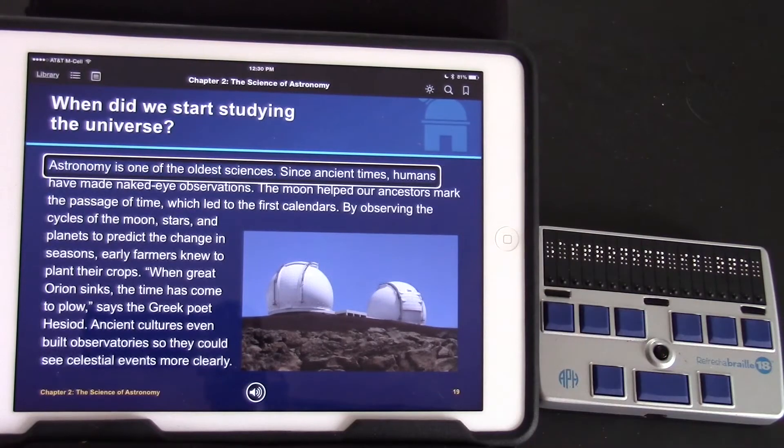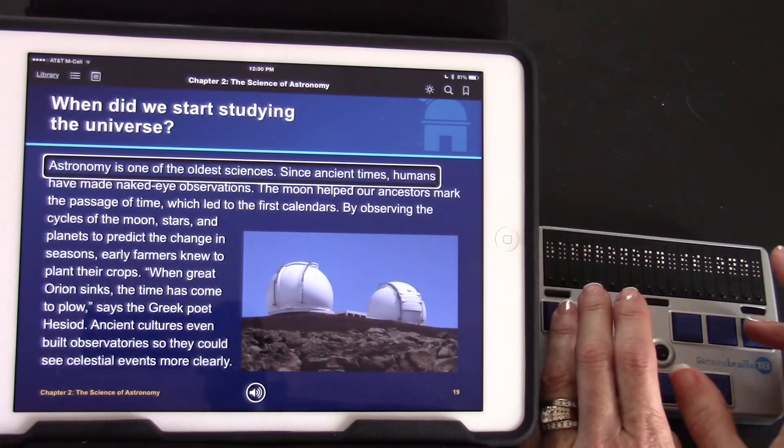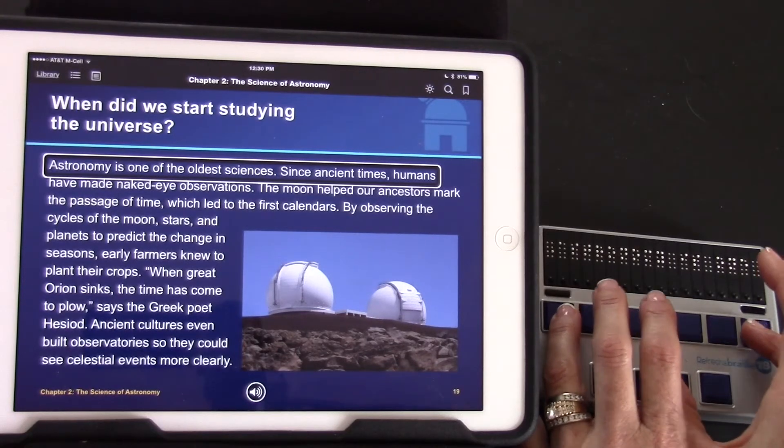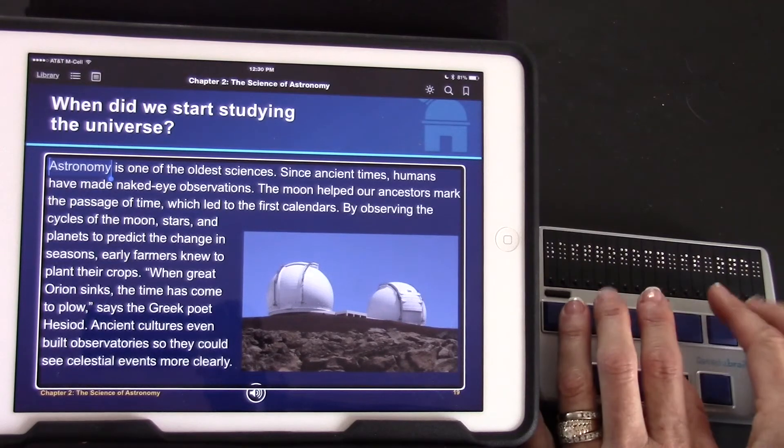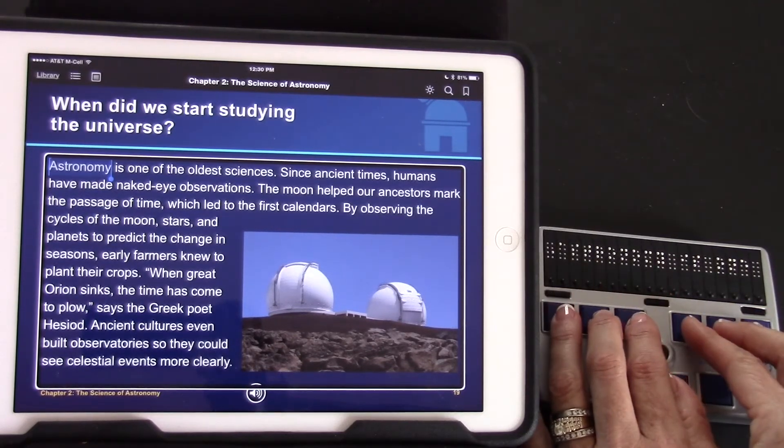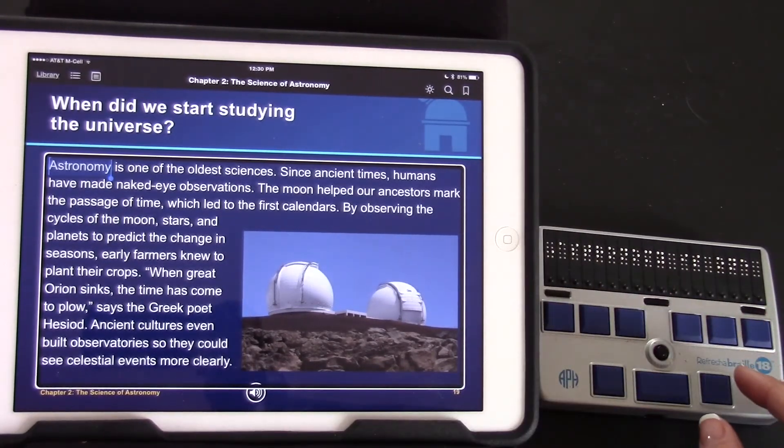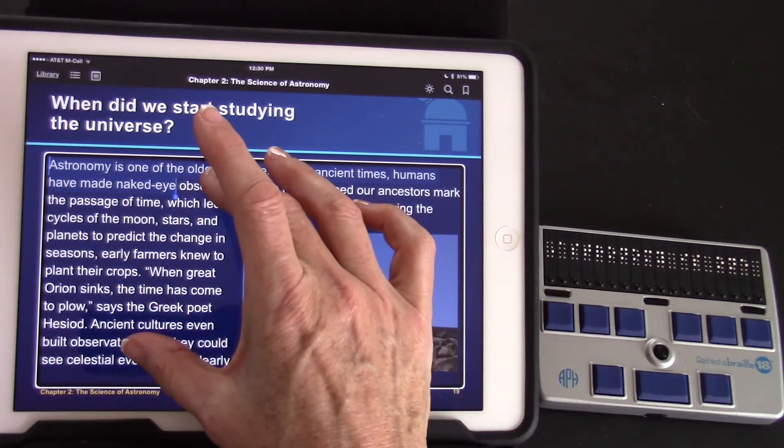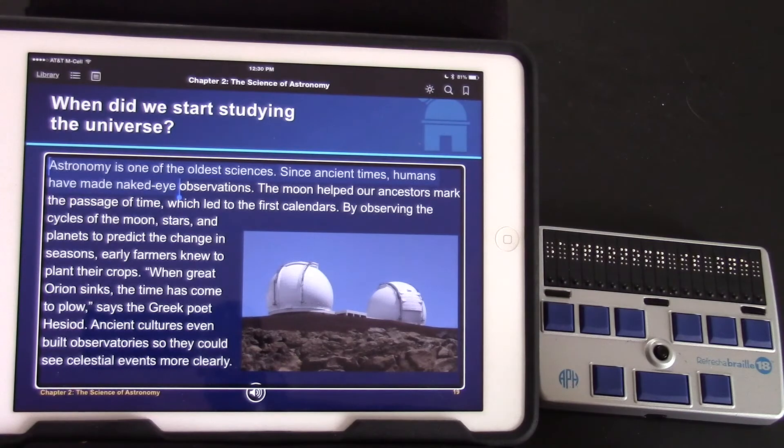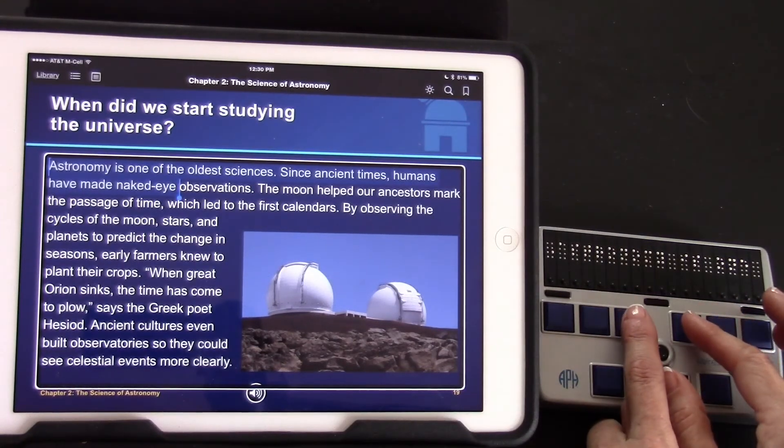I can also select words in iBooks using three six space. It will select the first word. But I cannot pinch out or include more words using the refreshable braille display. I can only pinch out on the screen itself. Selected observations unselected. Once it's selected I can use the C chord to copy one four space.